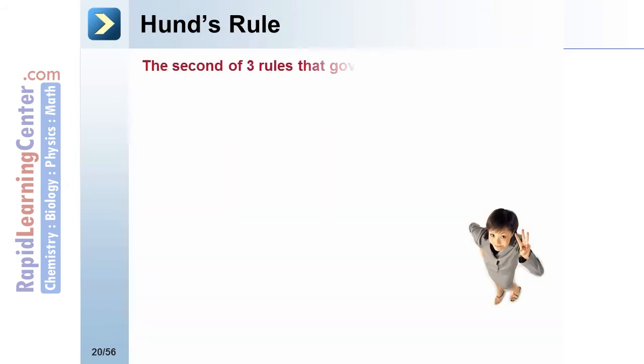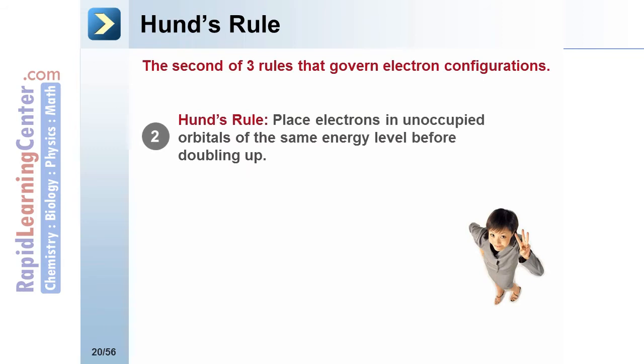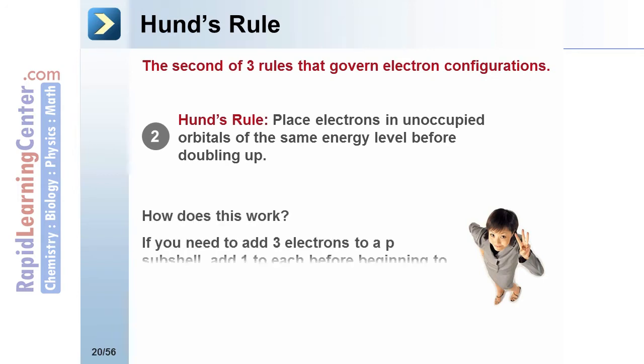The second rule is Hund's rule. It states that you should put an electron in each orbital of a subshell before doubling up. This allows for the lowest possible energy of the electrons. For example, if you need to add 3 electrons to a p-shell, add 1 to each before beginning to double up.